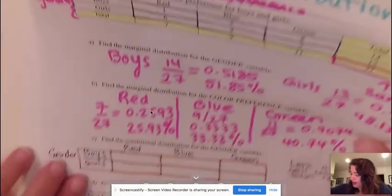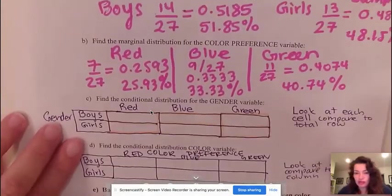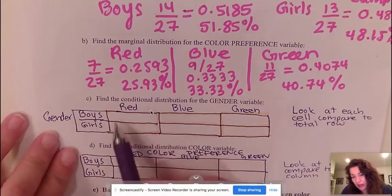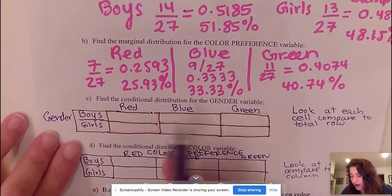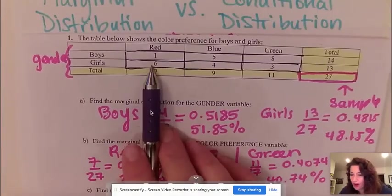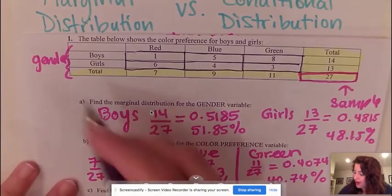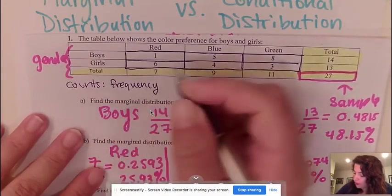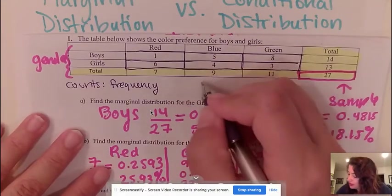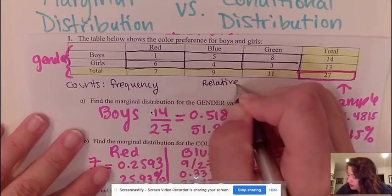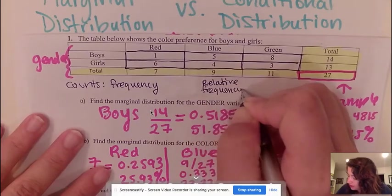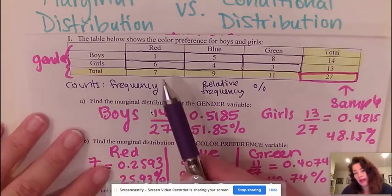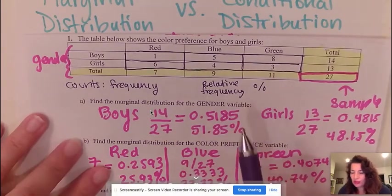All right, so I recreated here and it says find the conditional distribution for gender. So if you remember, gender is looking at the rows. So I basically just recreated my cells, which are empty. And what we have here are counts, which is the same as frequency. And when I turn a count to a percentage, that is called a relative frequency. So you can be given a table with counts or you can be given a table with relative frequency.